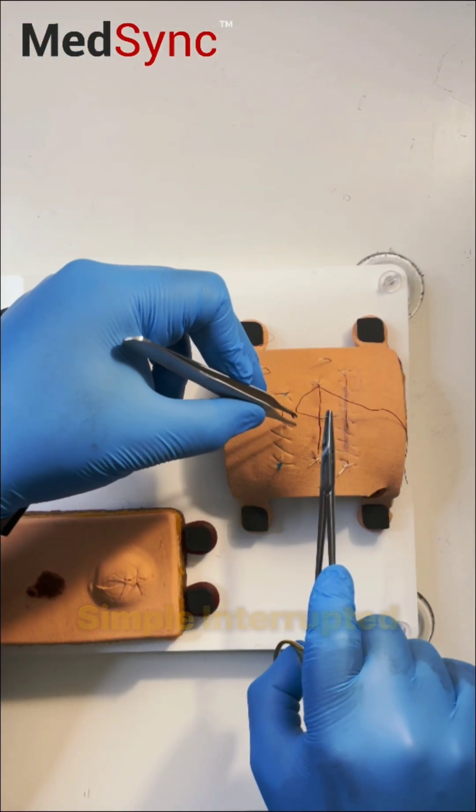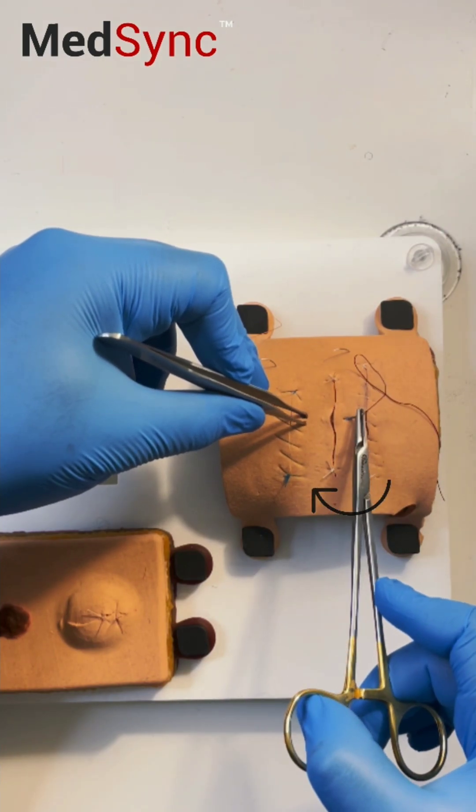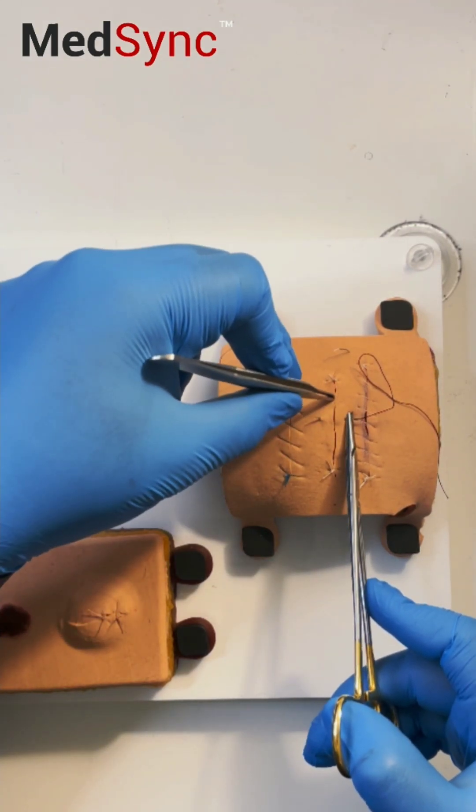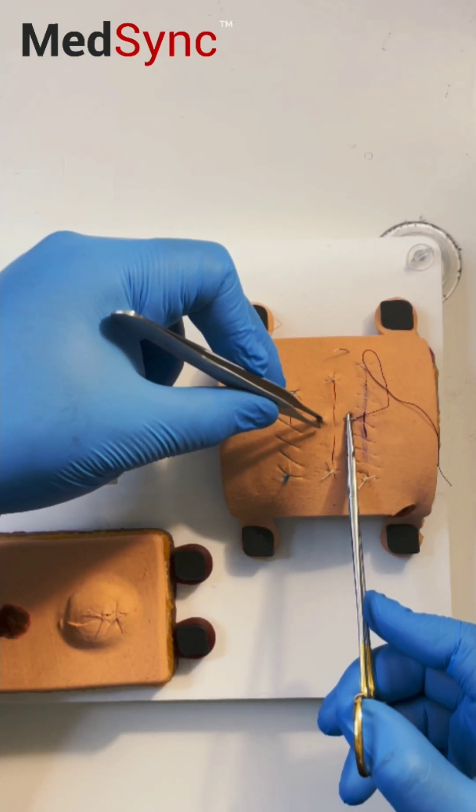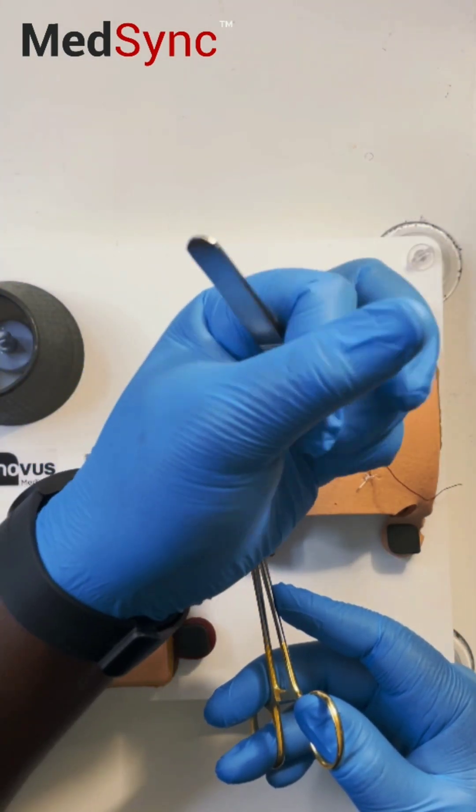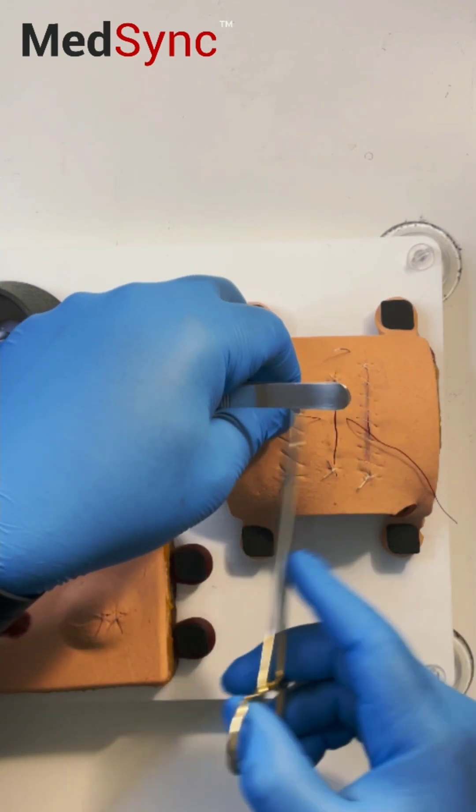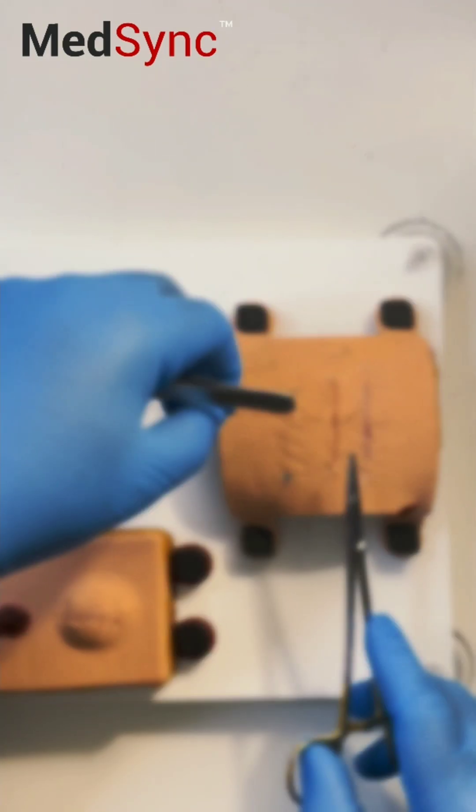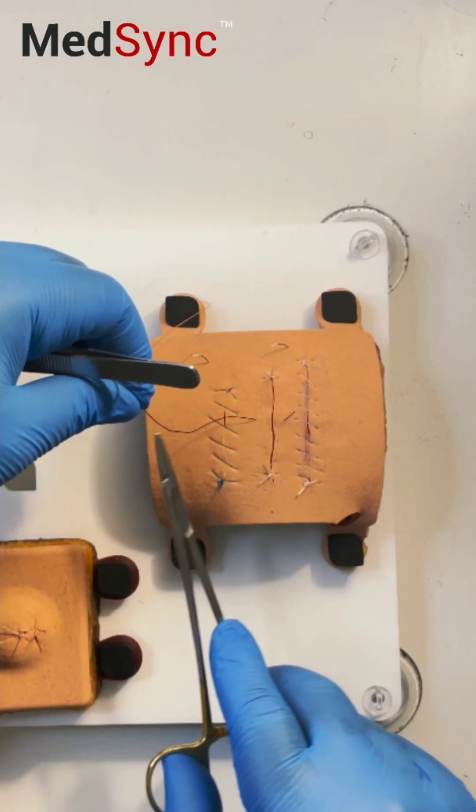The simple interrupted suture: enter at 90 degrees, rotate your wrist, come out opposite at equal distance from the wound. Here's the key to speed: pull the needle through, palm your forceps, grab the suture, and pull through with just one hand for economy of movement and real speed. Leave a short end and a long end.